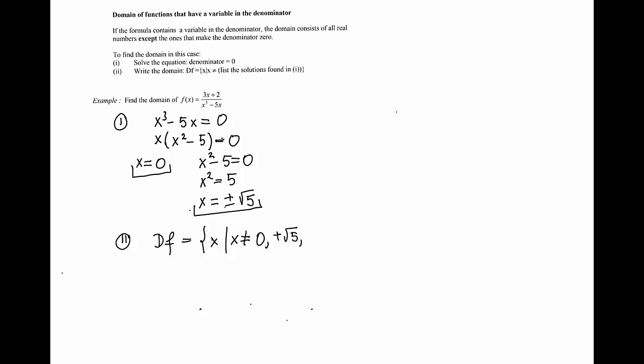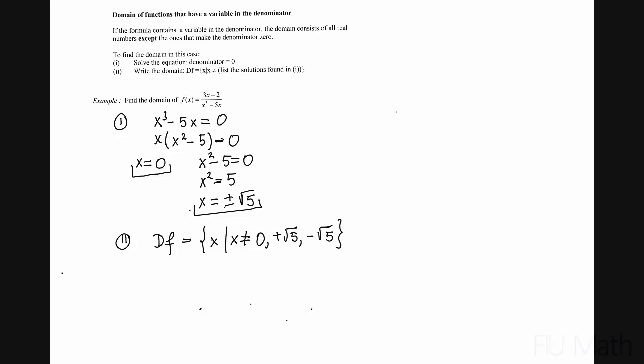So there are two solutions to that part of the equation. Once we have the solutions, we go to step 2 and simply write the domain. The domain of the function f is the set of all x's such that x is different than 0, positive square root of 5, and negative square root of 5. We can use any value of x as long as it is not 0, square root of 5, or negative square root of 5.